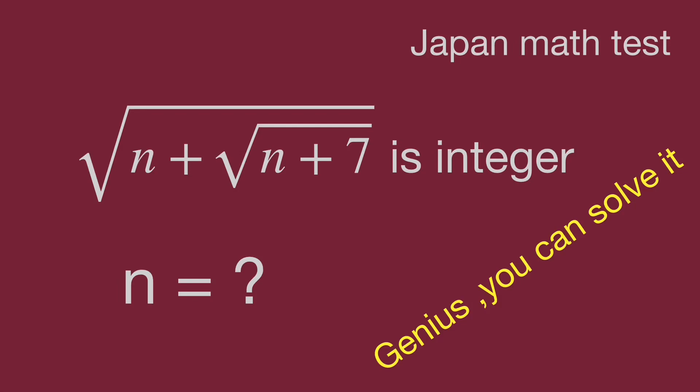The square root of n plus square root of n plus 7 is an integer. Find the value of n.